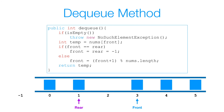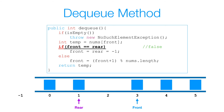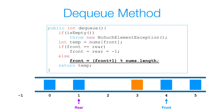Now let's look at the dequeue method. The first thing we want to do is check if our queue is empty, because if it is, there are no elements to remove — in that case, we'll throw a new NoSuchElementException. If our queue is not empty, we store the data at our front index in order to return it. Then we check if our front is equal to our rear, because if so, that means we have exactly one element in our queue, and we set both front and rear back to negative 1. Otherwise, we set front equal to (front + 1) % nums.length — that same calculation — so our front moves to index 4, and then we simply return our data at the previous front index.